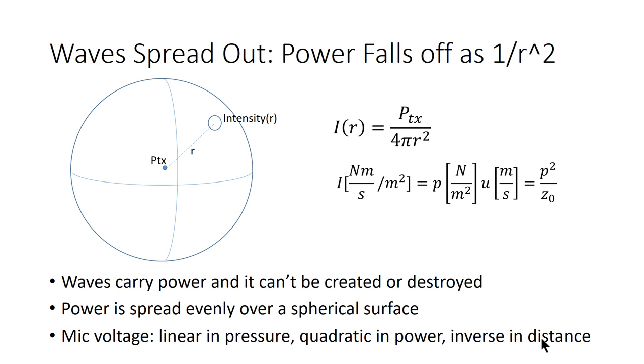So we're going to call our acoustic impedance Z0 and substitute U = P / Z0 into our second equation here to find that our intensity is equal to the pressure squared divided by the acoustic impedance.